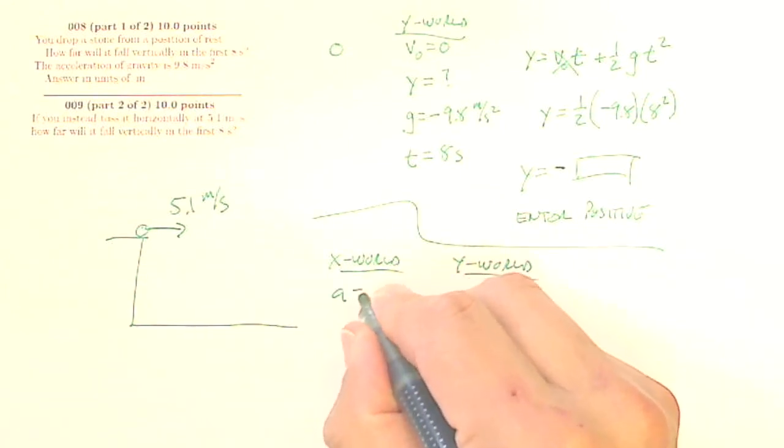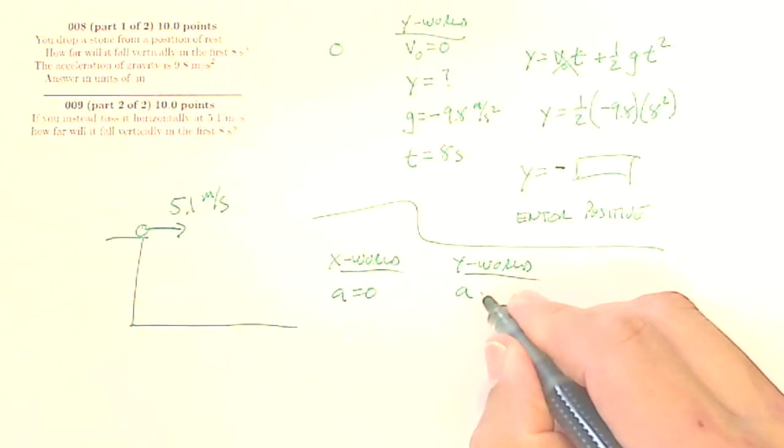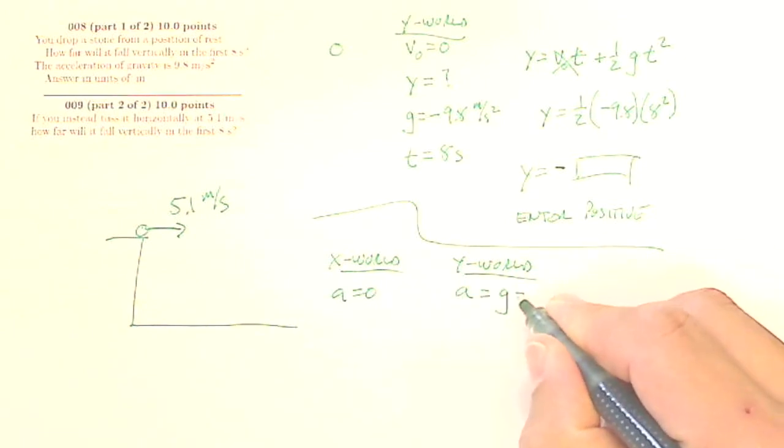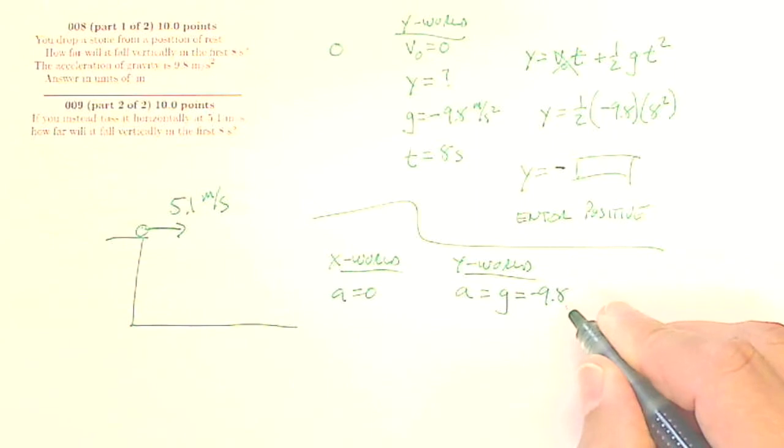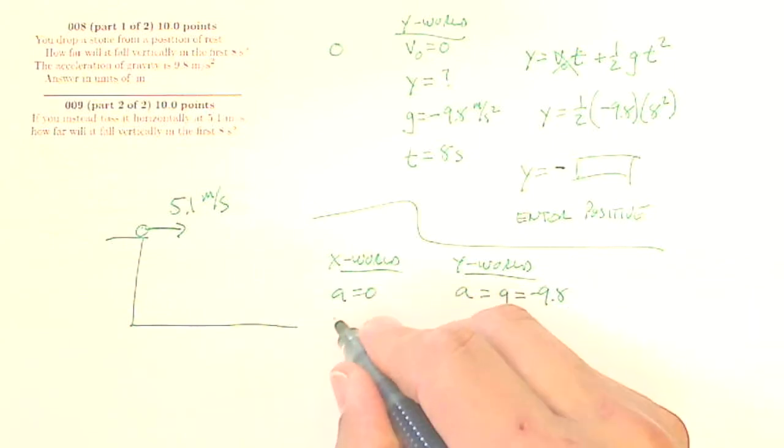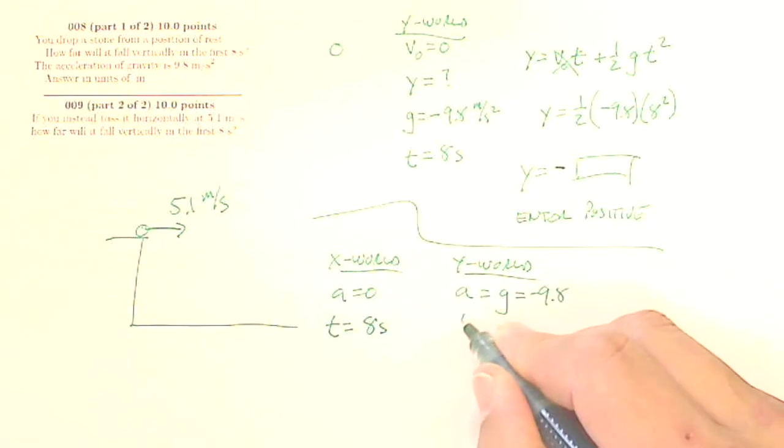Well, x world, I know that my acceleration is 0. Y world, my acceleration is going to be gravity, is going to be negative 9.8. I know that my time is going to be 8 seconds, and my time here is going to be 8 seconds.